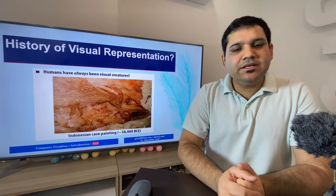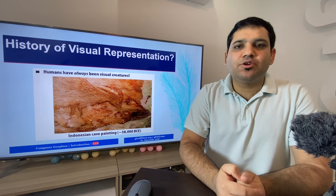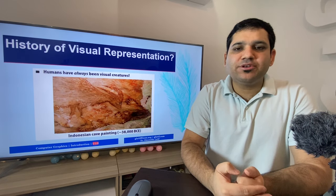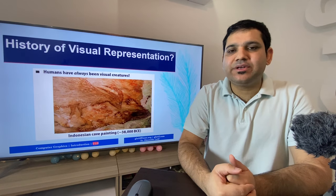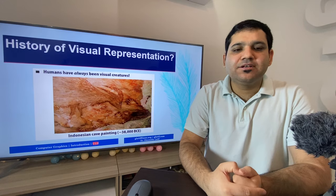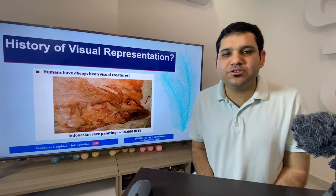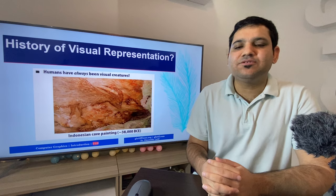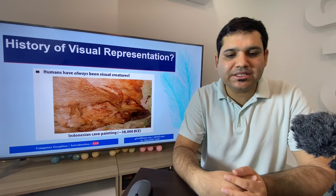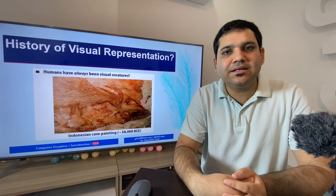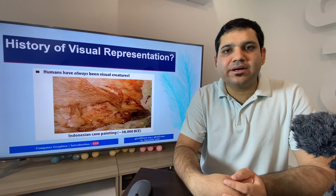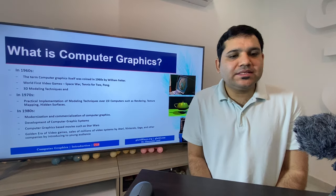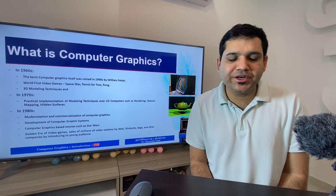So, history of visual representation — humans have always been visual creatures. Almost every living animal uses eyes to see and recognize objects and visual information. Humans recognized visual things even before spoken language was created. An example of this is Indonesian cave painting that is around 38,000 years BCE — approximately 40,000 years old.